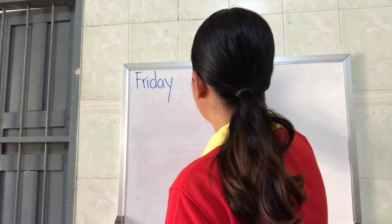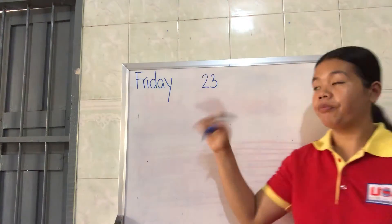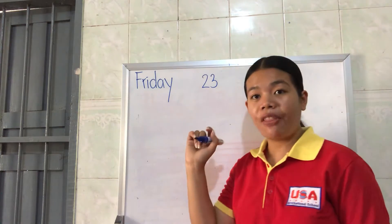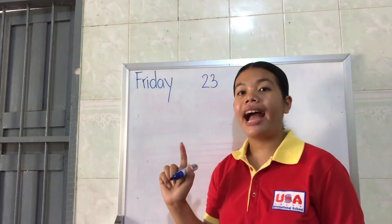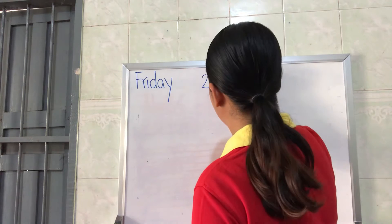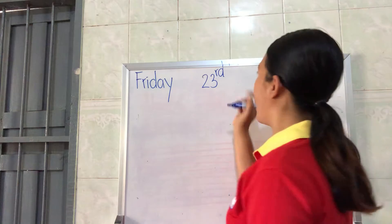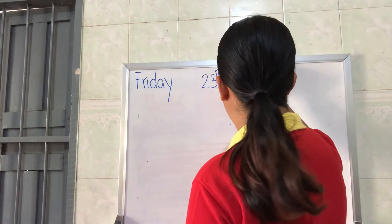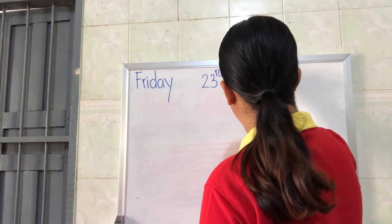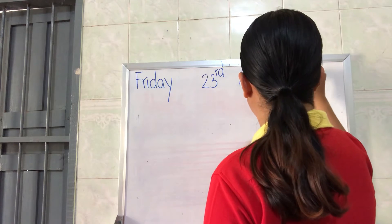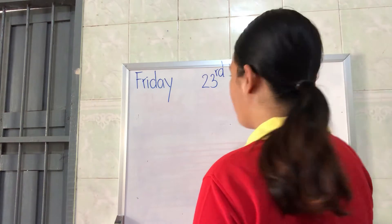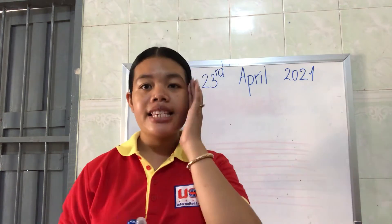I have number two and number three. What do we call it? It is the 23rd — and I want to write the ordinal suffix R-D. And what month is this? It is April — A-P-R-I-L — and the year is 2021.